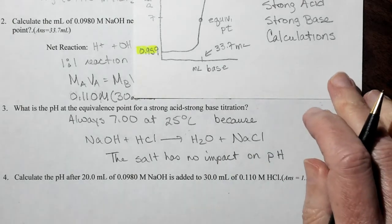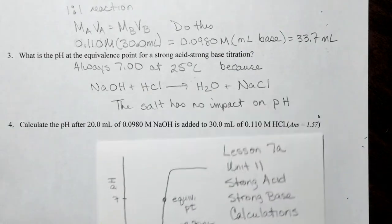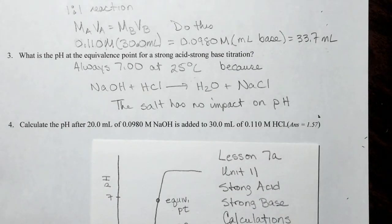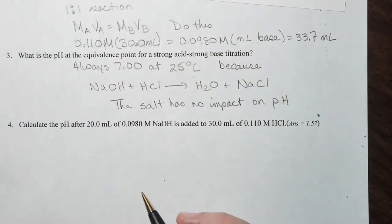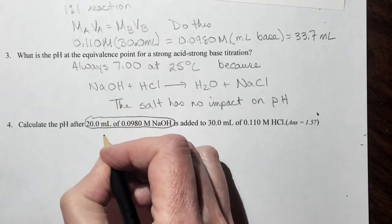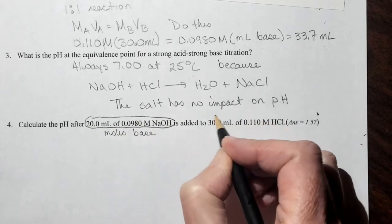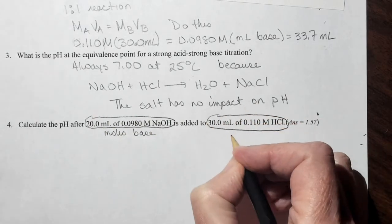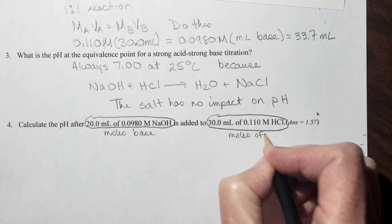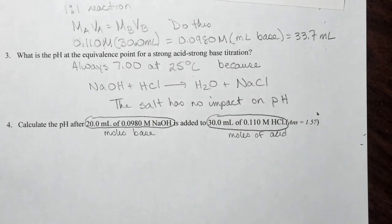Okay, our last problem, or not our last problem because we have one more on the next page. We're going to calculate the pH after 20 mLs of 0.0980 molar has been added to 30 mLs of 0.110 molar HCl. So this is a limiting reagent problem. We have moles of sodium hydroxide and we have moles of acid. So we are going to set up a BCA table.